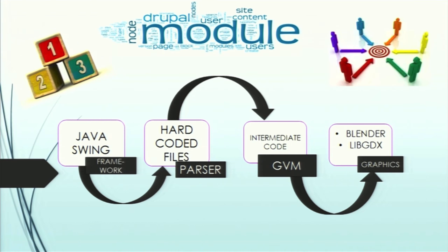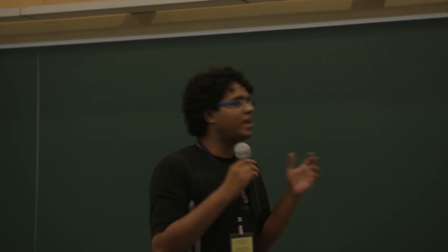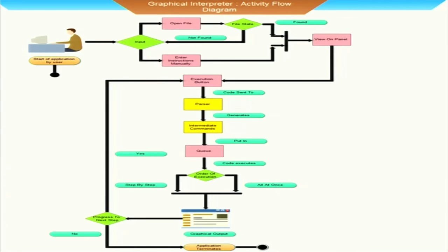We have a panelized framework and a partial interpreter that interprets single lines and gives you intermediate code that will be executed by the graphics. Our graphics platform is supported across different platforms: Linux, Windows, and Android. The project basically has four main modules. The framework which has been implemented in Java Swing for desktop applications. The parser, which is a hard-coded parser. There is a GVM which generates the intermediate code and executes the graphics. The graphics part has been implemented using Blender and libgdx. The choice of Blender and libgdx is because of the cross-platform support.